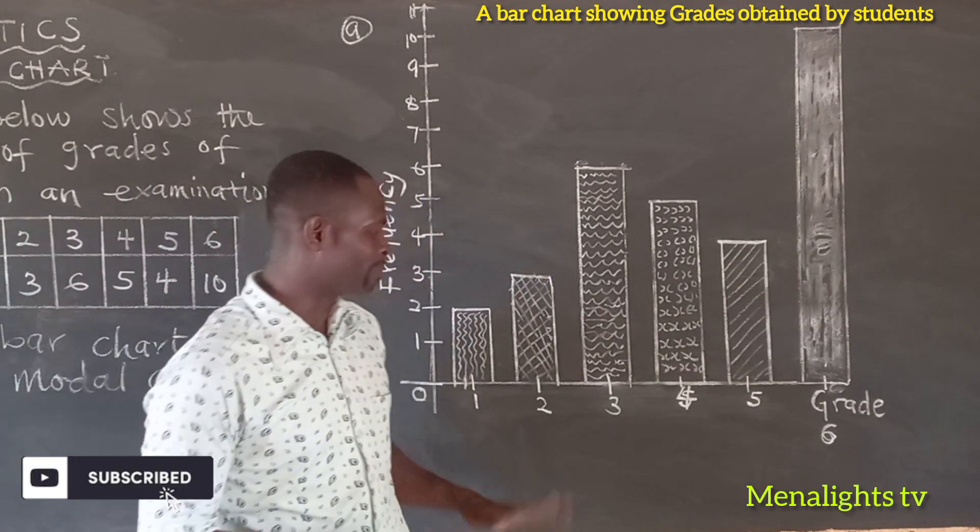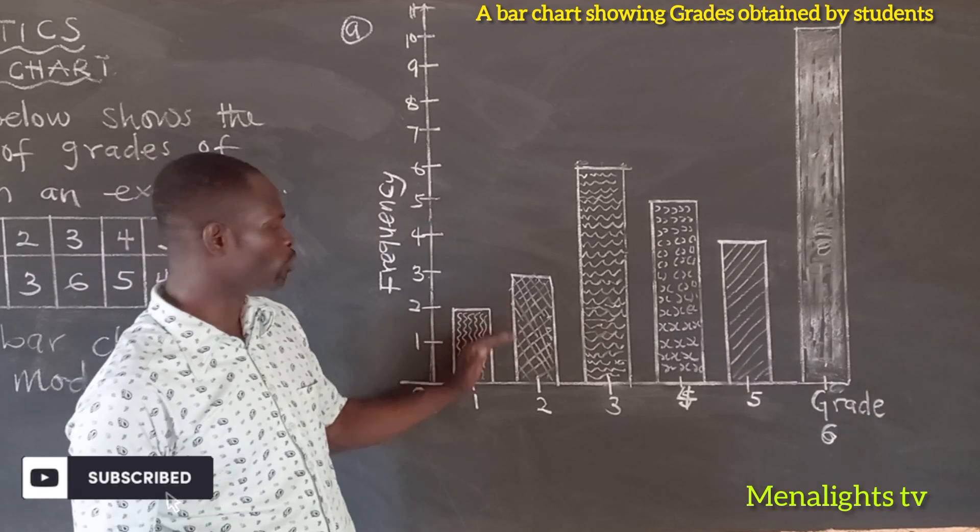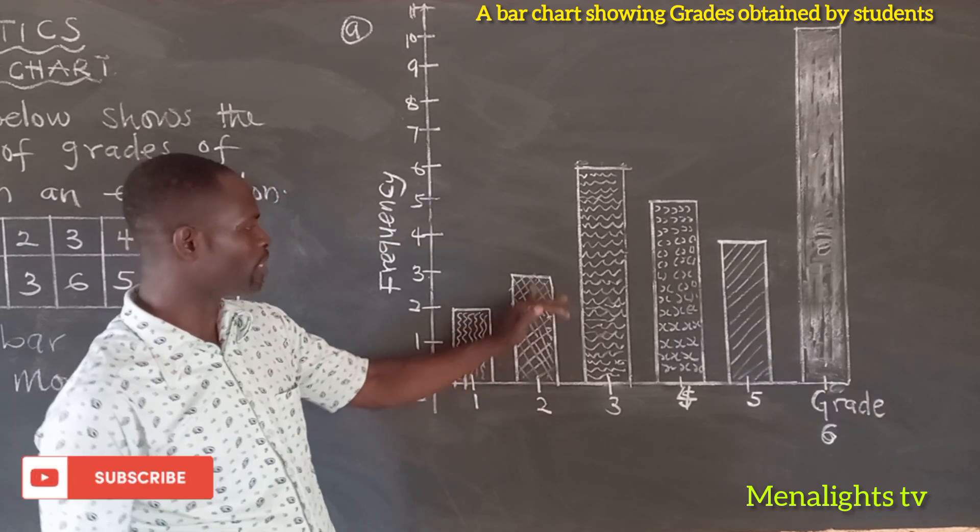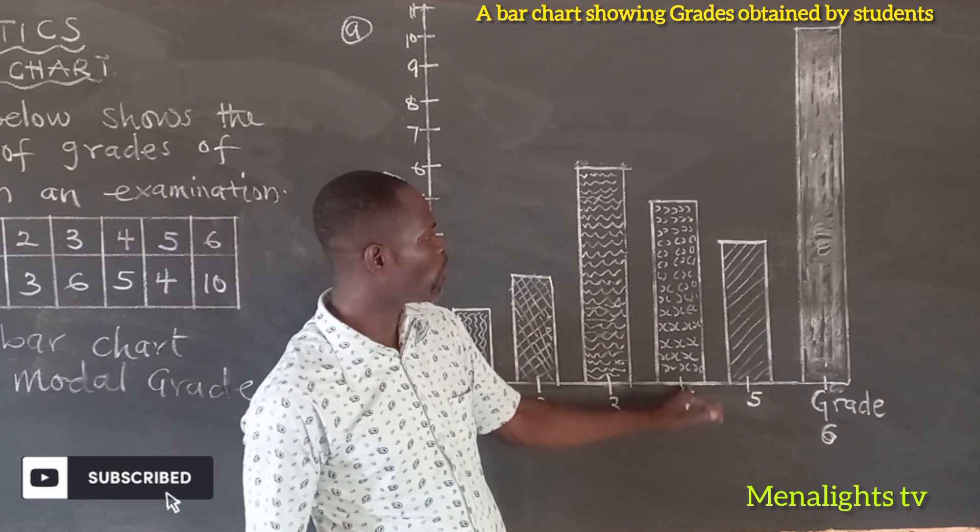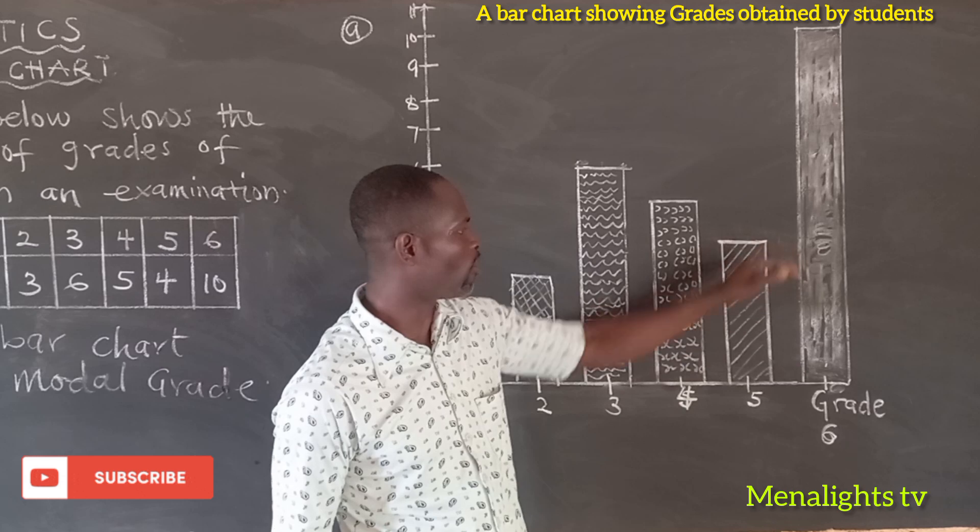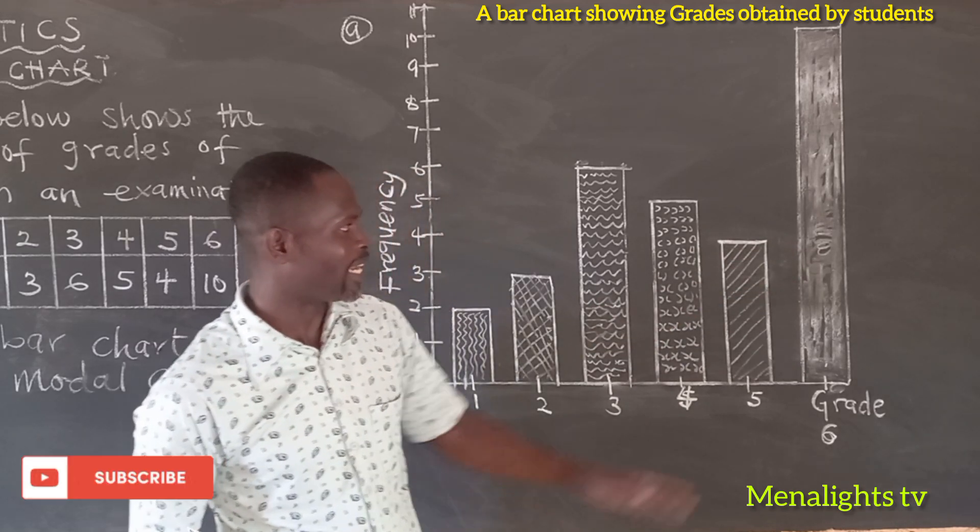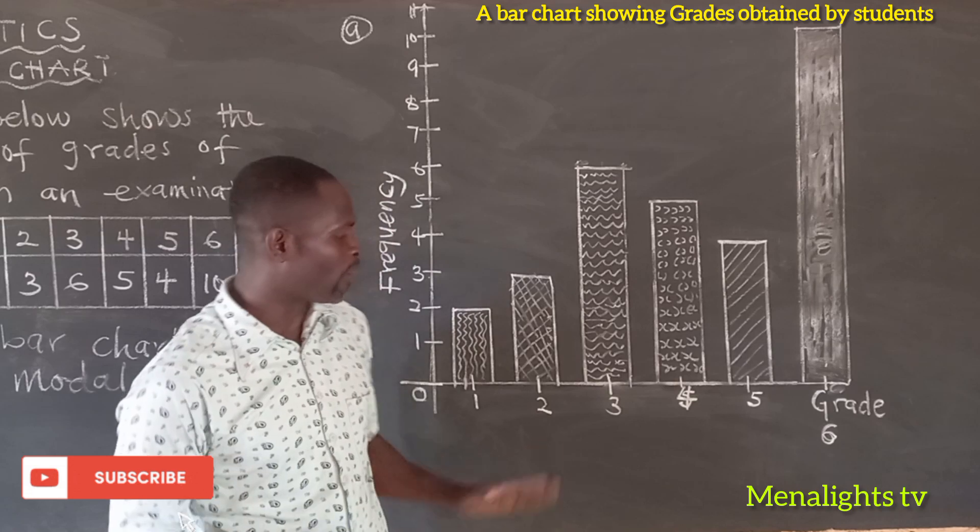So we are done with the bar chart. The grade 1 is having the frequency of 2. Grade 2, frequency of 3. Grade 3, a frequency of 6. Grade 4, a frequency of 5. Grade 5 having a frequency of 4. And the last one, grade 6, having the frequency of 10.